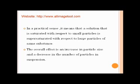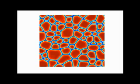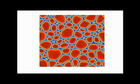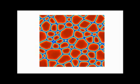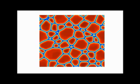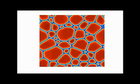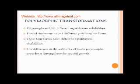In a practical sense, it means that a solution that is saturated with respect to small particles is supersaturated with respect to large particles of the same substance. The overall effect is an increase in particle size and a decrease in the number of particles in suspension. In this Ostwald ripening animation, we can see small particles disappearing slowly while the large particles increase their size — the small particles are dissolving in the solvent and re-precipitating on the surface of large particles.